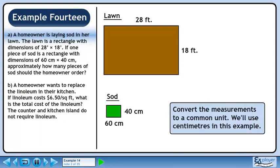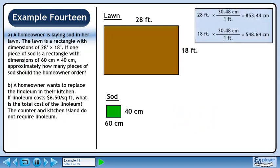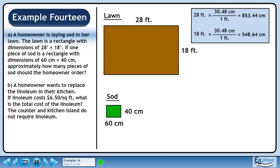Convert the measurements to a common unit. We'll use centimeters in this example. 28 feet is 853.44 cm, and 18 feet is 548.64 cm.